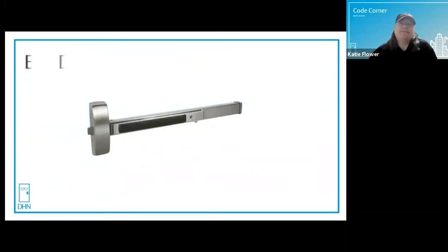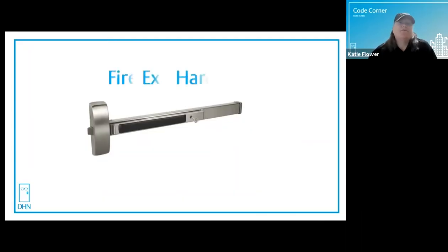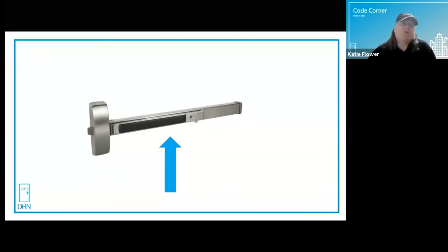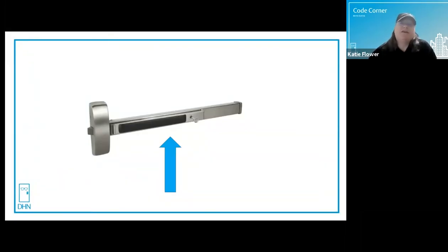First of all, an exit device is also known as a panic bar or panic hardware. Fire exit hardware, which we see in the code, is specifically used on fire rated doors — and the beloved slang term is crash bar. Whether it's a modern style bar like the one shown in the picture or the older crossbar type, the actuating portion — that is the part you push in on — must extend at least half the width of the door, mounted vertically between 34 and 48 inches above the finished floor.